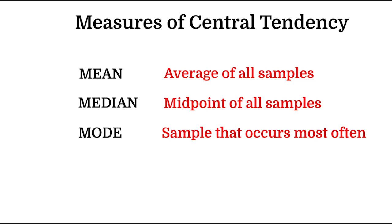The first measure of central tendency we're going to talk about is mean. We are more or less already familiar with this — it is the average of all the samples. When we talk about samples, it is a subset of the whole population. We are trying to infer some data about our population by sampling that population.